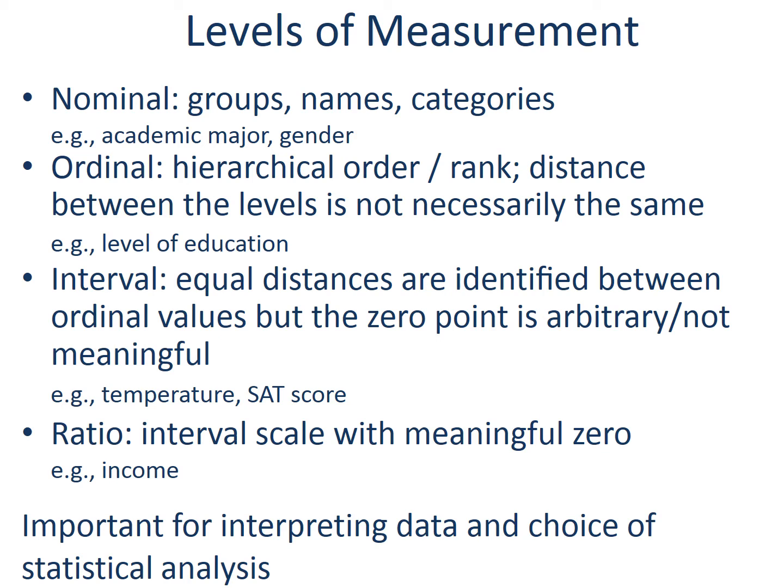Measurements can take different values depending on the levels of measurement. In nominal measurement, the values refer simply to the name of the attributes. For example, for academic major, you can code liberal arts as 1, education as 2, and engineering as 3. You can use 0 for female and 1 for male, but it is an arbitrary choice, so you can choose to use 1 for female and 2 for male.